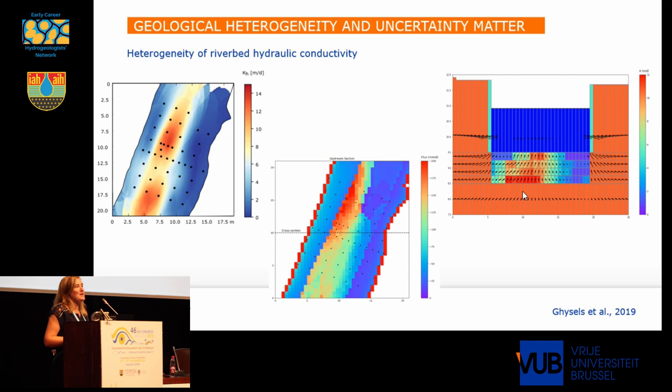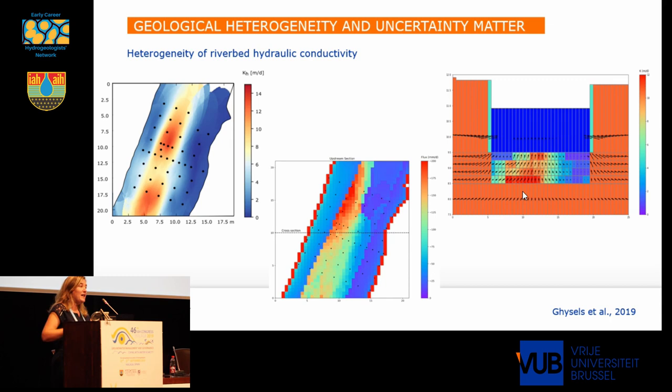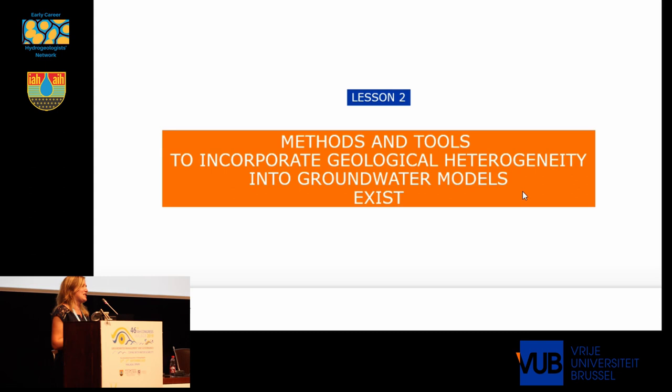These are just a few of the results, but also in riverbeds we could see that hydraulic conductivity clearly is heterogeneous in this environment, and that this has an effect on the distribution of the fluxes in the riverbeds, and thus on how the aquifer and the river interact. So I think we all agree that this heterogeneity is important. We should take it into account to model flow, transport, pumping tests, tracer tests, thermal transport, and so on.